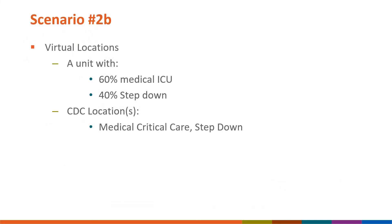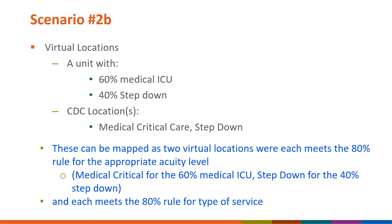Here is another way you can map the same unit using virtual locations. Let's say your facility would like to follow HAI surveillance for each acuity level separately by keeping those patients separate, so for this particular unit, you would have two locations in NHSN to report. If you want to split this area into two virtual locations by acuity level, the first location could be mapped as medical critical care in NHSN because 100% of patients are critical care acuity level and general medical service type. The second location could be mapped as a step-down unit because 100% of patients are step-down acuity level. In terms of surveillance, you would collect and enter data for each of these NHSN virtual locations separately, and you would obtain rates, standardized infection ratios, and standardized utilization ratios for each location separately.